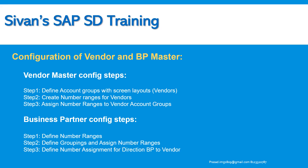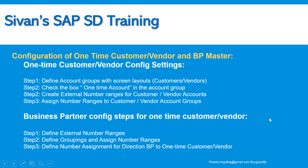For vendor master data, we need to define account groups with screen layouts, create number ranges for vendors, and assign number ranges to vendor account groups. The BP configuration steps are: define number ranges, define groupings and assign number ranges, and then define number assignment for the direction BP to Vendor.